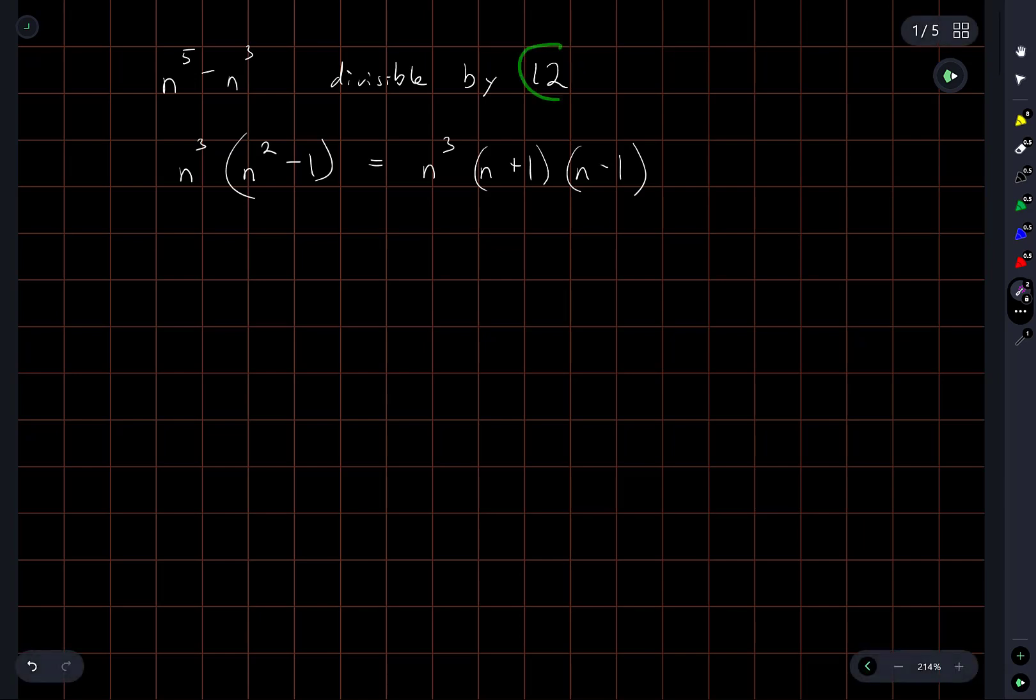So in order for something to be divisible by 12 it has to be a multiple of 3 and a multiple of 4. At least one of n minus 1, n, and n plus 1 is a multiple of 3. Okay so that's done, that's good.